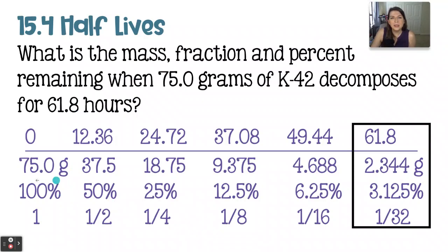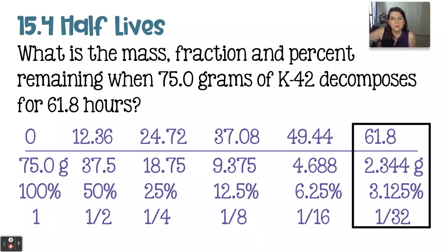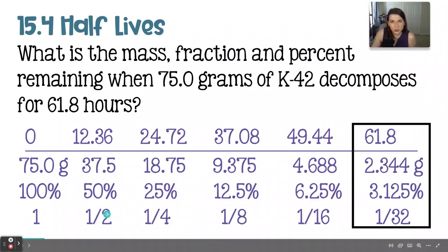For the percent, we begin with 100% and cut it in half every half-life, working down to 3.125%. For the fraction, we begin with 1 over 1 and cut it in half every half-life — which means doubling the denominator each step. So: one-half, then one-fourth, then one-eighth, one-sixteenth, and finally one-thirty-second.